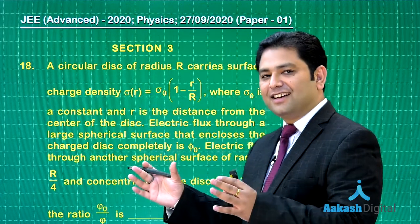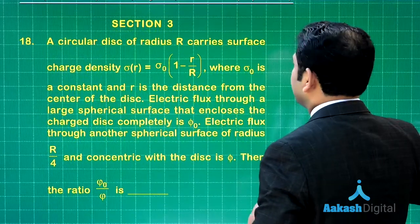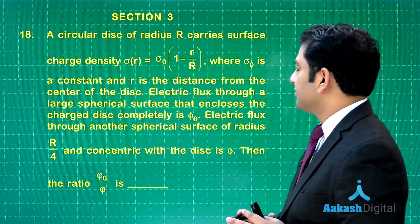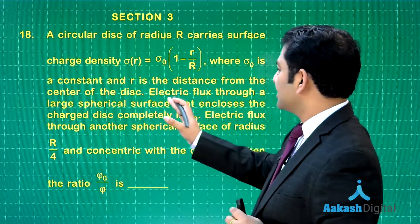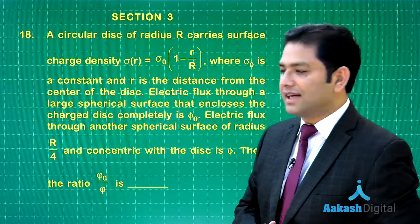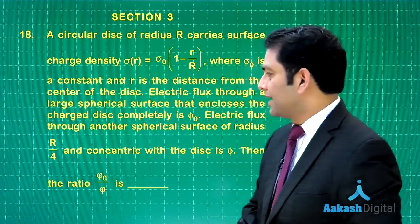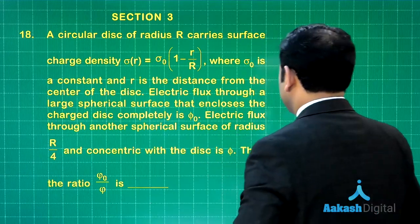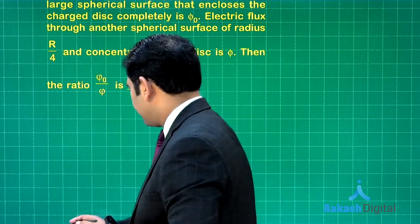The final question is from electrostatics and Gauss law calculation of flux. The question is not much difficult. There is a circular disk of radius R that carries surface charge density σ₀(1 - r/R). We need to calculate electric flux through two surfaces: number one through a large spherical surface that encloses the charged disk completely, φ₀. In the second case we have another sphere of radius R/4 concentric with the disk. We need to calculate the ratio of the flux.